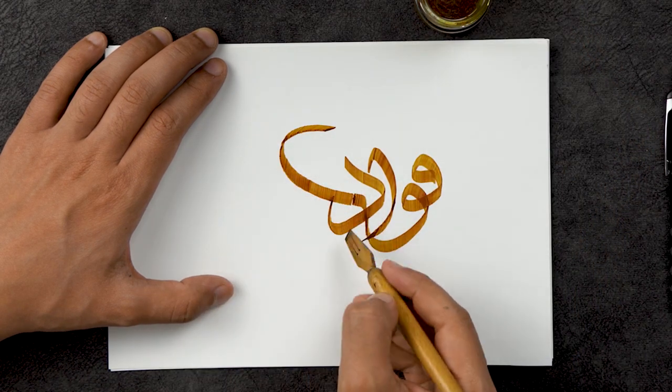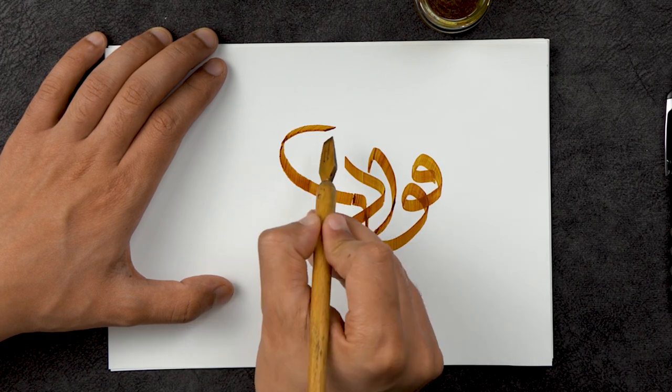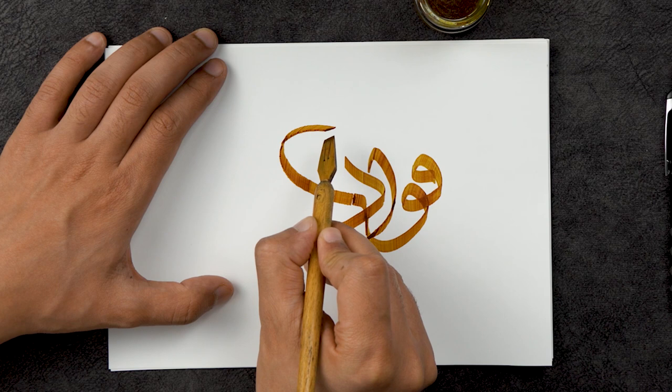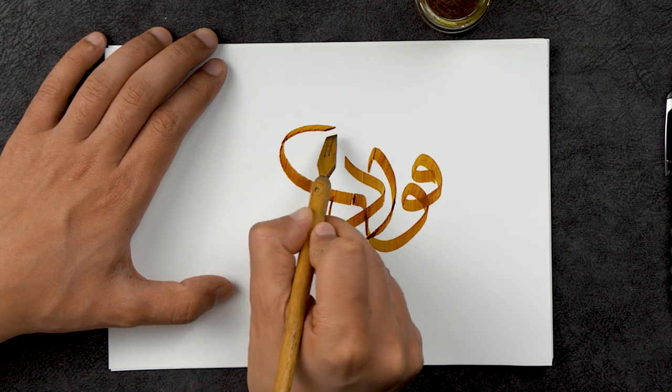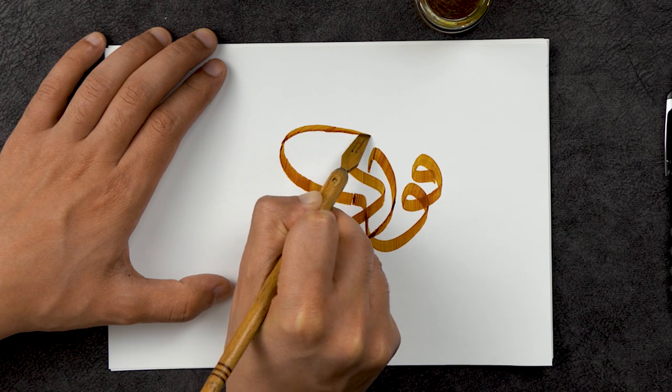And this little part here, as you can see, this we do it with thickness of the column. And then here we just try to give it some kind of smoothness in the movement to make it a little bit thinner.